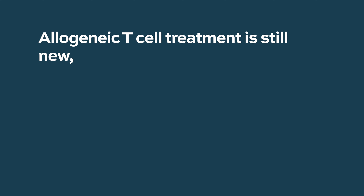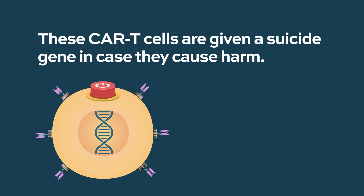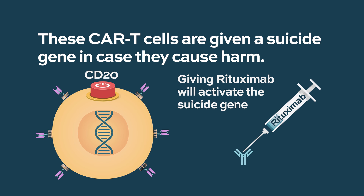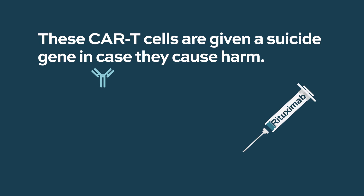We're still early in allogeneic T cell treatment, so the downside is we're still learning about it. Early results are very promising — we saw some promising results at the last ASH meeting. These T cells, as currently designed, have a suicide gene, so if we get in trouble with those T cells, we can simply switch them off and kill them with a simple treatment. For the future, this is a new strategy that we're going to pursue, but we need to build more knowledge about it.